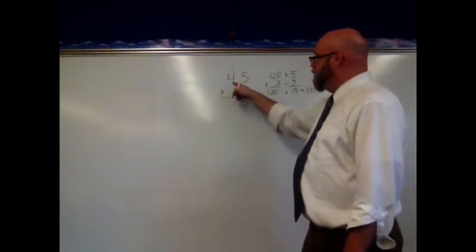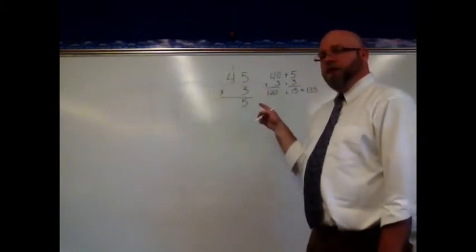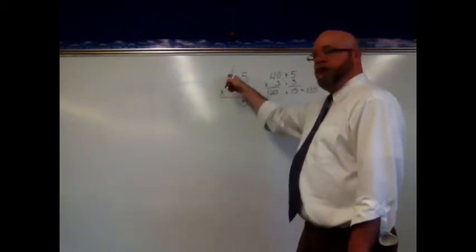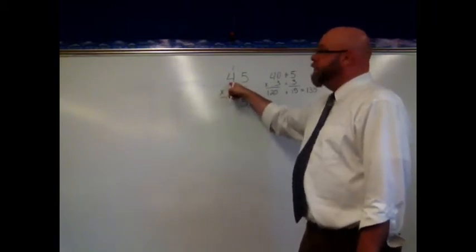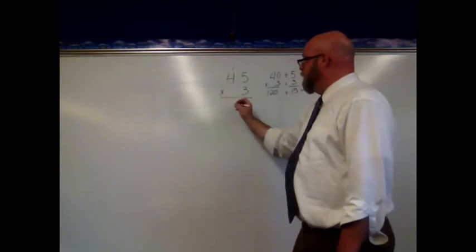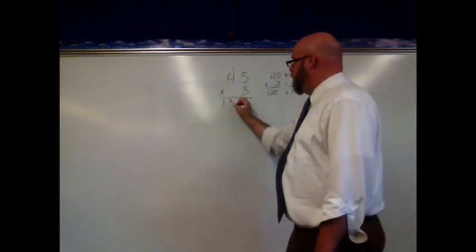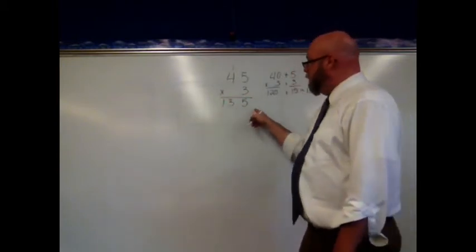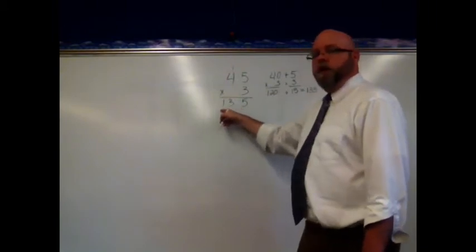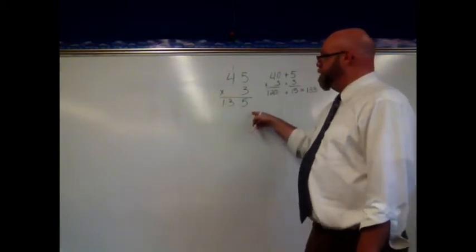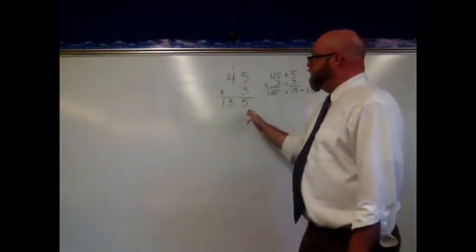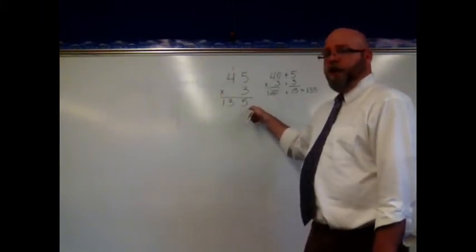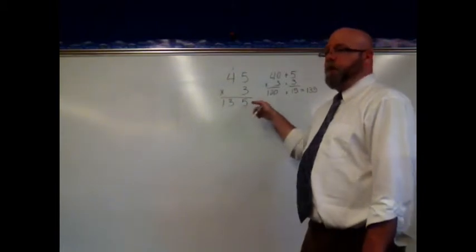Now I multiply 3 times 4, but I'm really multiplying 3 times 40. It's in that 10's place value. So 3 times 4 is 12, plus the 1 ten is 13 tens, or 135 altogether. So these are the types of algorithms we do. We're going to practice a few more of these using the standard algorithm for multiplication.